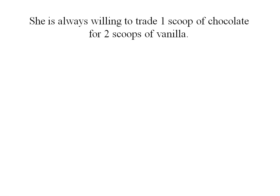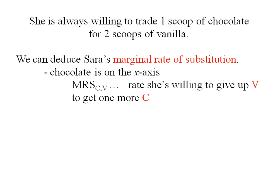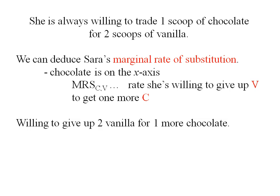With the information that she's willing to trade one scoop of chocolate for two scoops of vanilla, we can deduce her marginal rate of substitution. Chocolate is on the x-axis, so the MRS is (C, V) — that's the rate she's willing to give up vanilla to get one more scoop of chocolate. Using the trade information, she's willing to give up two vanilla for one more chocolate, so her marginal rate of substitution is two.